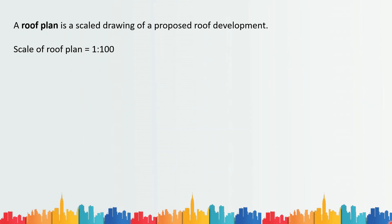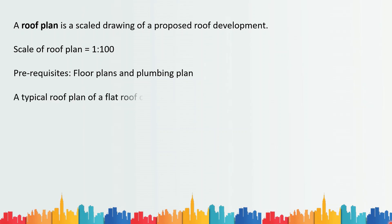Now, prerequisites of drawing a roof plan — what are the things you should have beforehand? First, you should have the floor plans so that you have a good idea about where the different units are, especially the kitchen, the staircase, and the sanitary units. Secondly, you should have the plumbing plan where you know where the rainwater pipes and the vent pipes are.